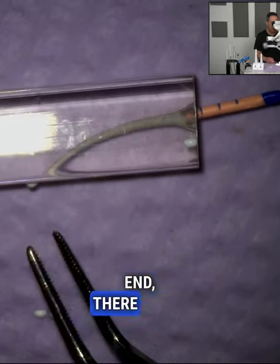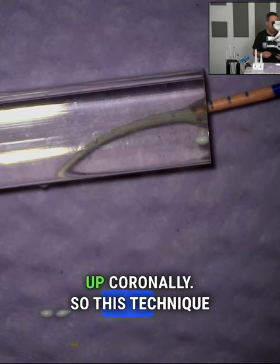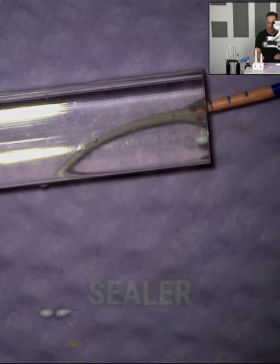At the coronal end, there was a little eking of the sealer up coronally. So this technique is effective and powerful for BC sealer and obturation.